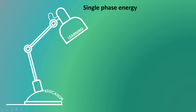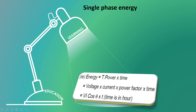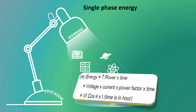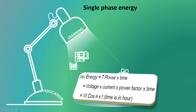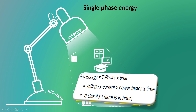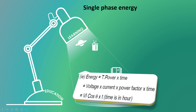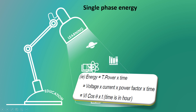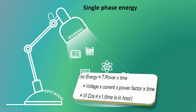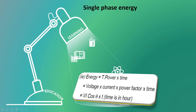Single phase energy. To find the single phase energy: energy equals to total power into time. Total power formula is voltage into current into power factor, which is V into I cos theta, because this is an AC single phase circuit. So energy formula is V into I cos theta into time in hours. This is a very very important formula, please remember.